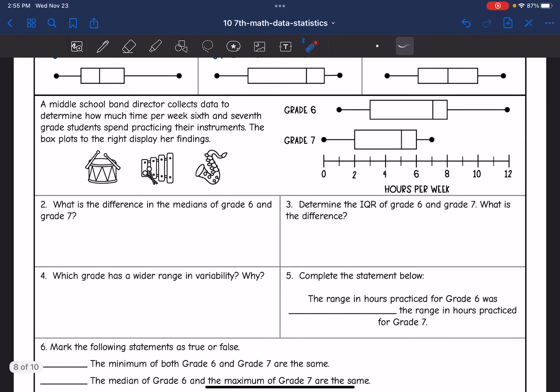It says, what is the difference between the medians of grade six and grade seven? So let's find these. Looks like the median of grade six is going to be at seven. And then the median of grade seven is at five. So the difference of them would be seven minus five, which is two.